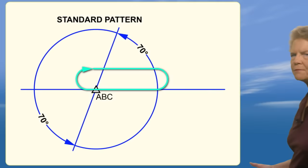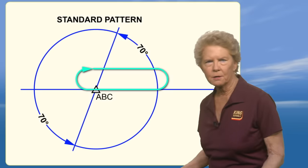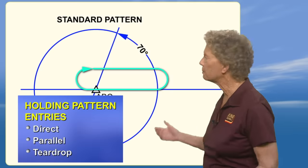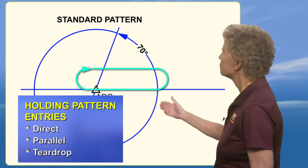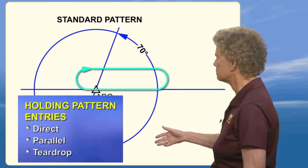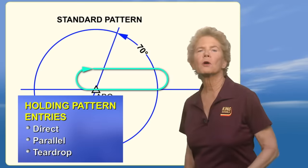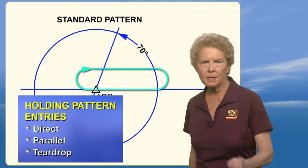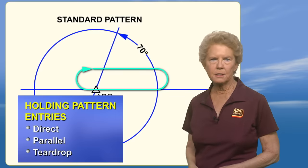There are three different ways of entering a holding pattern: direct, parallel, and teardrop. We're going to talk about each of them in detail.